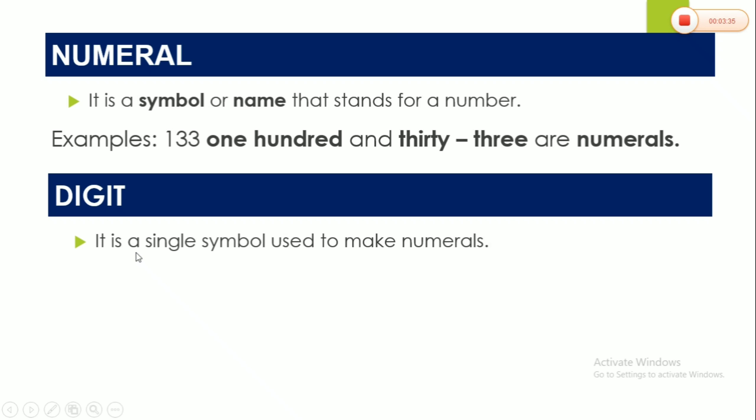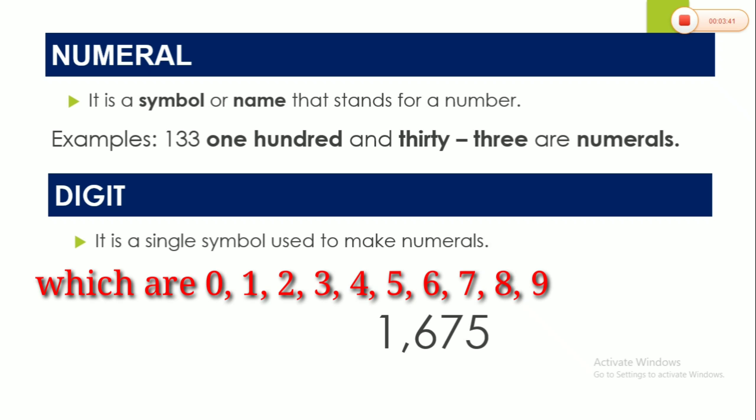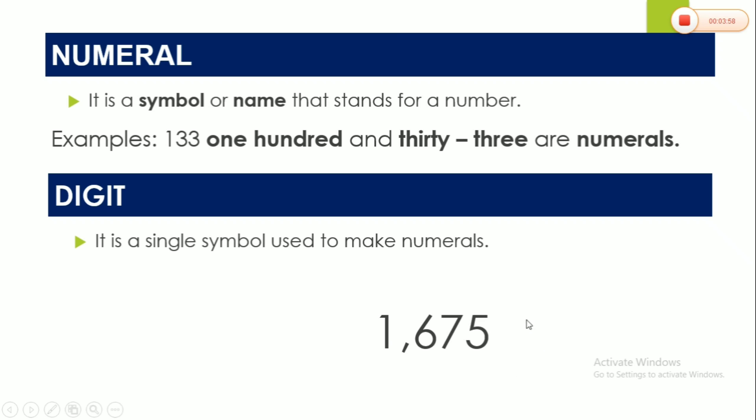it is usually the single symbol, which is 0, 1, 2, 3, 4, 5, 6, 7, 8, and 9. Only that. So if you are going to get some of the digits and form a numeral, it will look like this. Let's have an example.